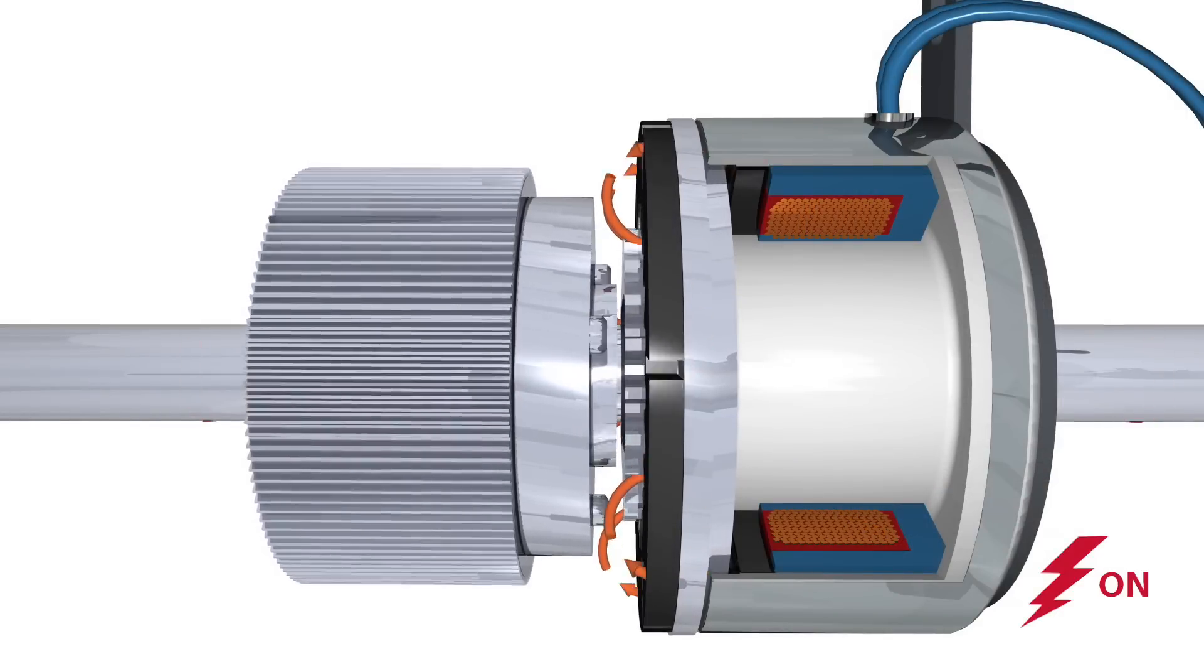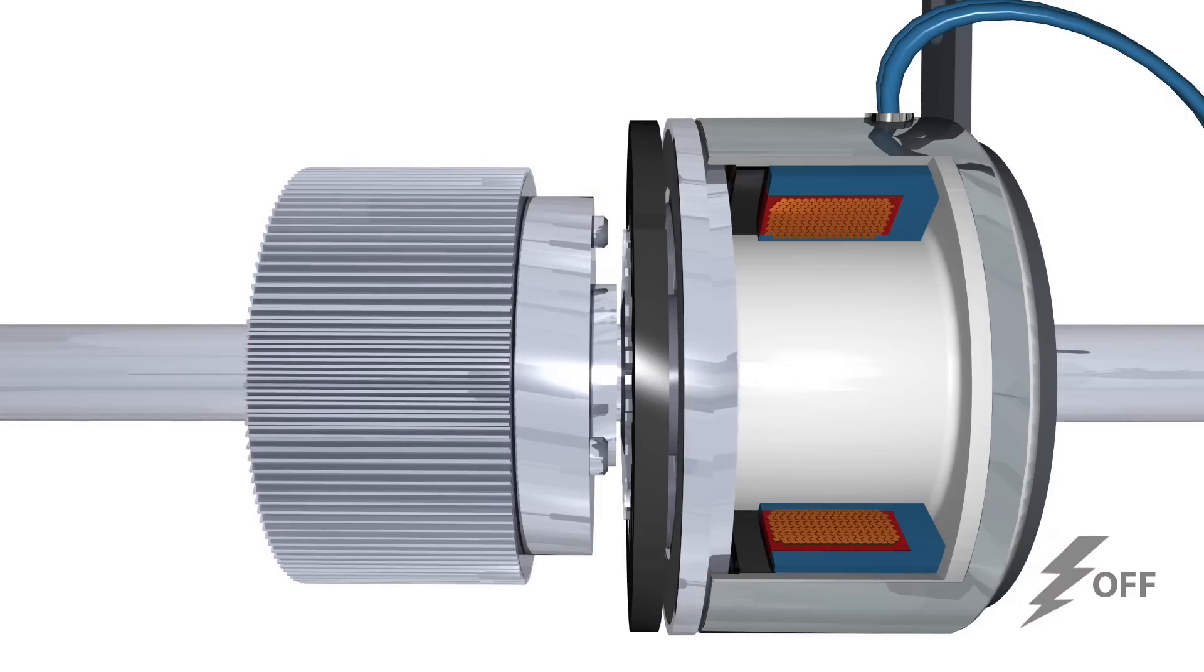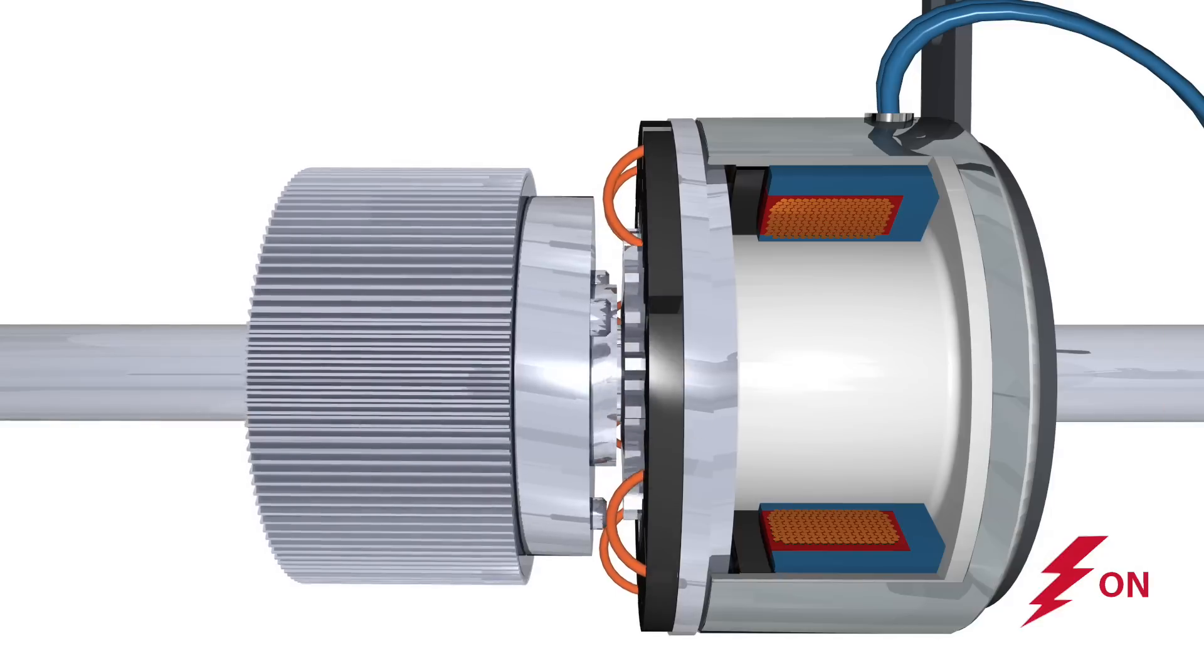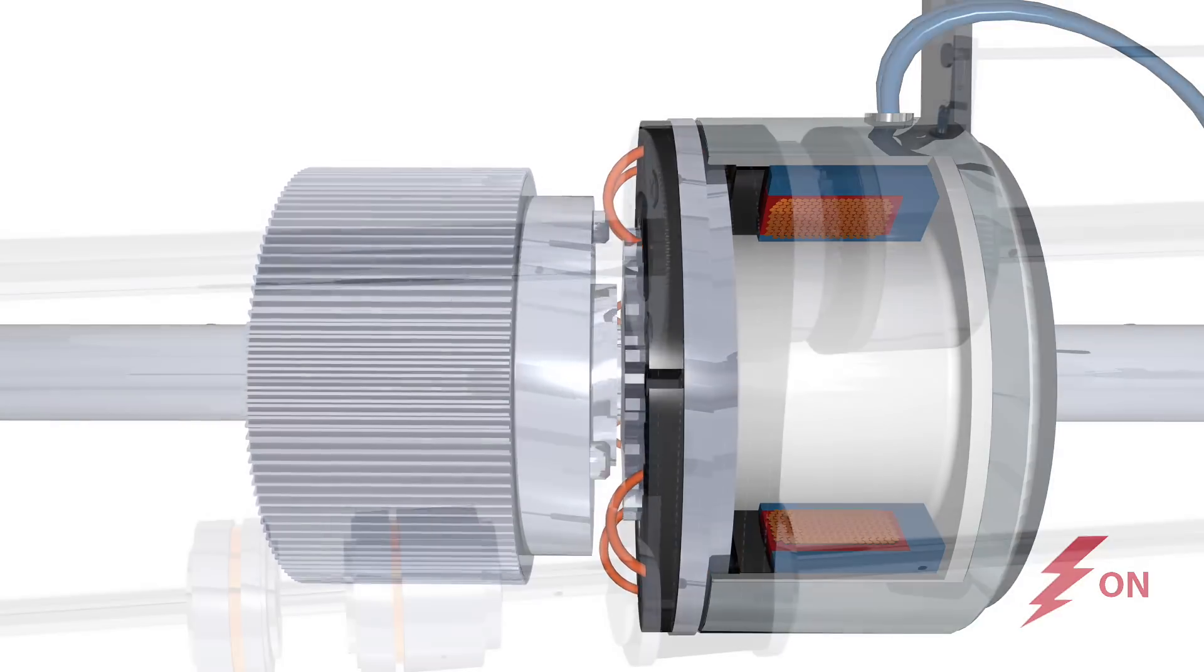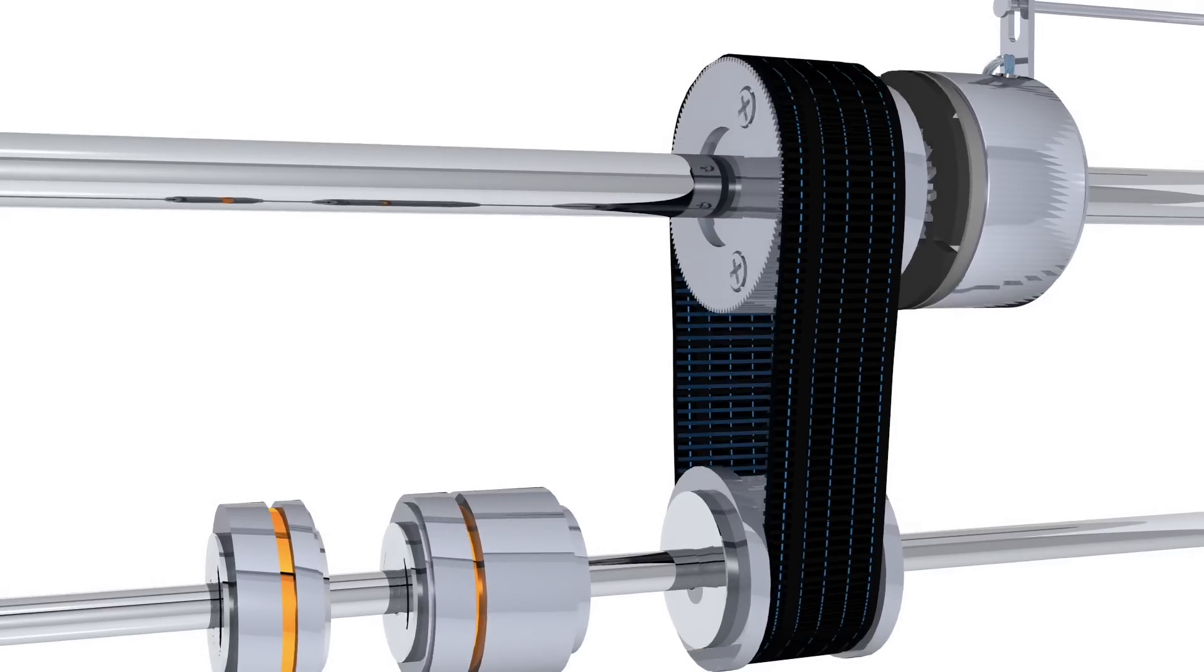The rotor portion of the clutch becomes magnetized and sets up a magnetic loop that pulls the armature against the rotor. When the clutch is fully engaged, torque transfer is 100% efficient as there is no relative slip.